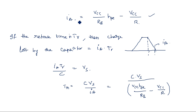The retrace time can be reduced by choosing a small value of RB. However, if RB is reduced greatly, the collector current IC equal to hFE times VCC by RB may increase to a point where the transistor dissipation may be excessive. This is what determines the retrace period.